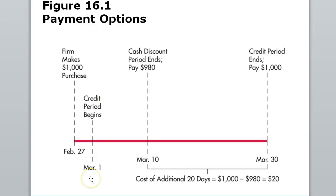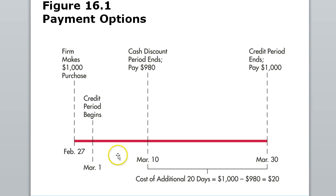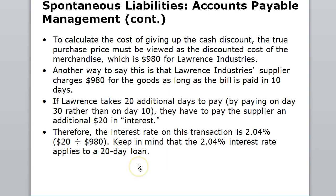On February 27 we make the purchase; credit begins on March 1st. If we pay within the first 10 days we get the 2% discount; if we pay within 30 days we pay the full $1,000. The cost of the additional 20 days is $20. To calculate the cost of giving up the cash discount, we look at the balance of $980. We divide $20 by $980 and get a 2.04% transaction rate — that's essentially the interest we pay on a 20-day loan.